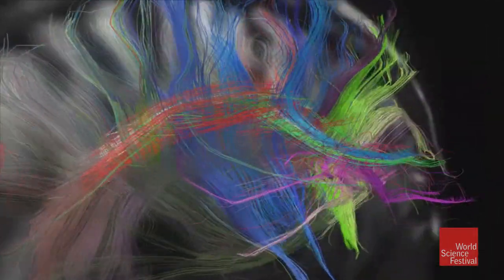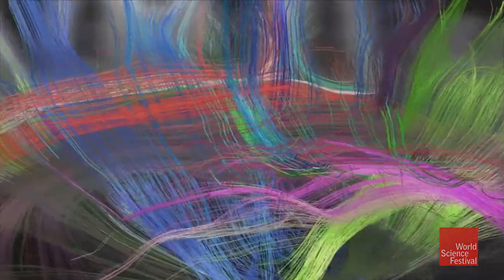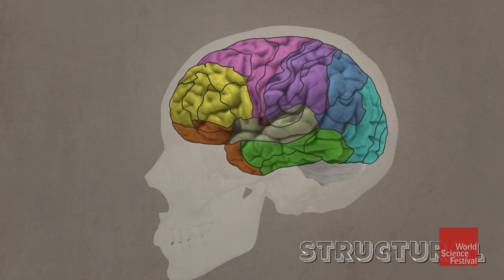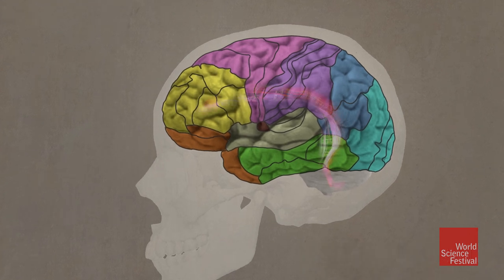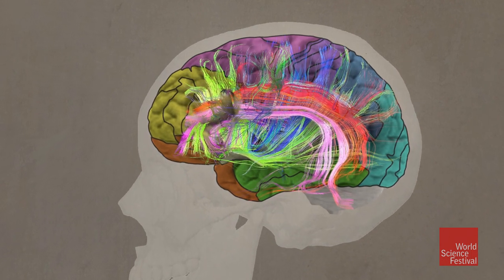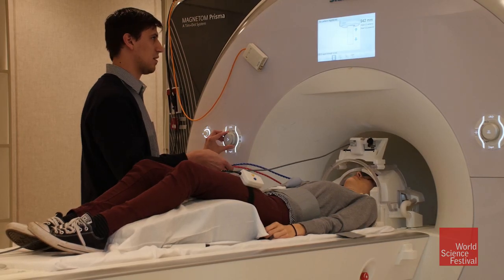By structural connections, we're really talking about the physical connections — the wires that connect nerve cells. Structural connectivity looks at the regions and the pathways connecting them. Functional connectivity, though, is more about how different parts of the brain work together on an ongoing basis. Brain function arises from conversations that different brain regions are having with each other.